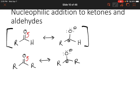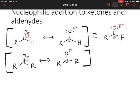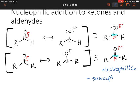Now let's draw the hybrid structures for both. For the aldehyde, we can see that the oxygen is partially negatively charged, and then the carbon down below is partially positively charged. That's the same for the ketone. So if we highlight those carbons that are partially positively charged, we can see that they are electrophilic, and that means they are susceptible to nucleophilic attack.